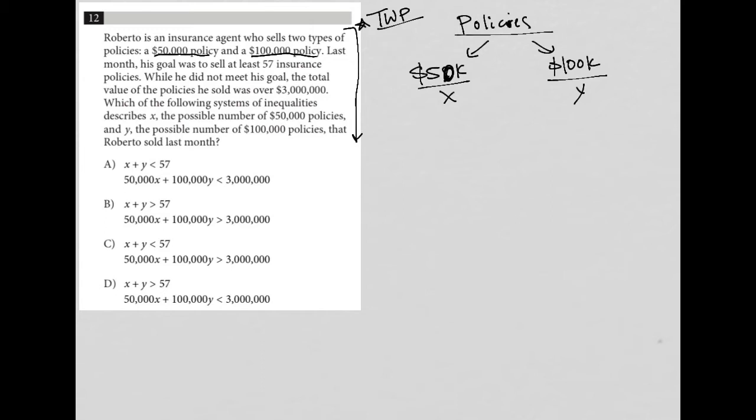The translation of that sentence says that however many $50,000 policies Roberto sells, plus however many $100,000 policies Roberto sells, needs to be greater than 57. It says at least 57, which actually means greater than or equal to.